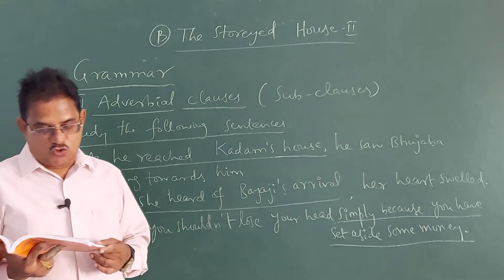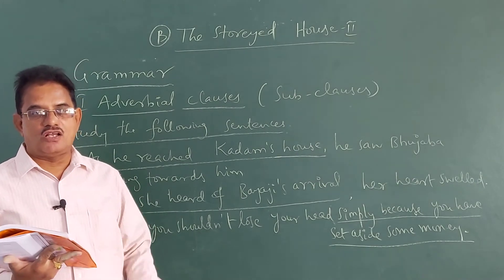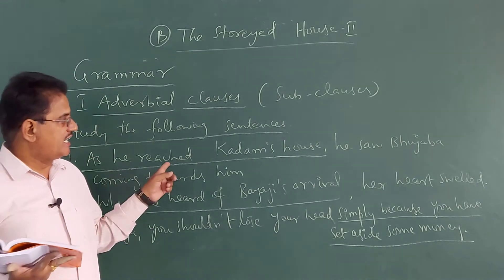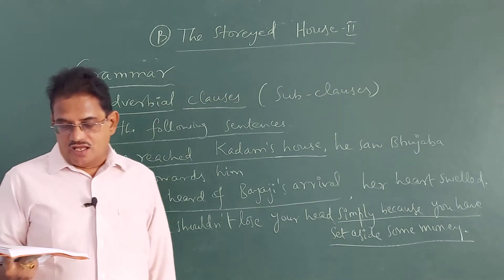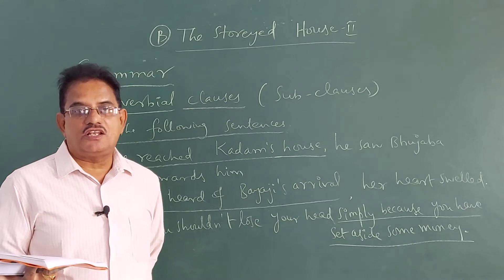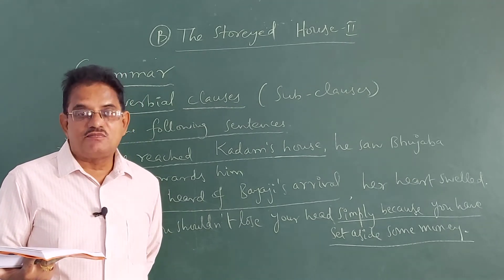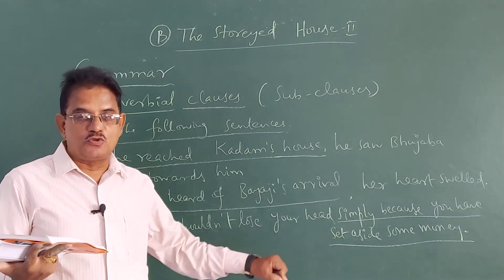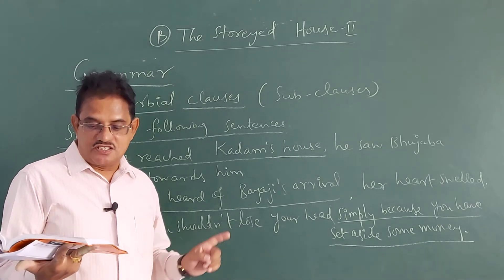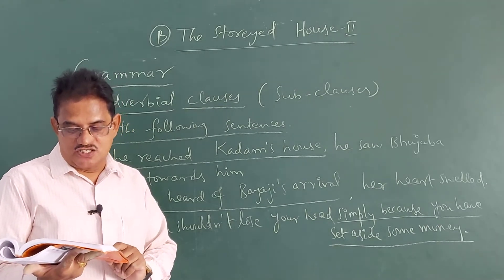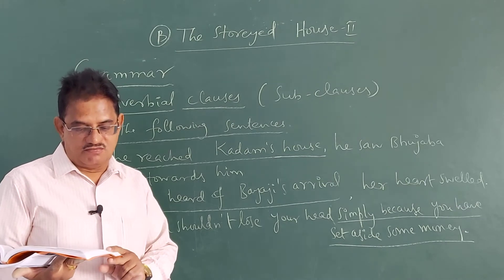Identify the adverbial clauses in the following sentences. You have to underline the adverbial clauses like in the examples given. For example: 'As Bayaji neared Budha Vihar, the children came running to him.' What should be underlined? 'As Bayaji neared Budha Vihar' — up to there you have to underline. That is the adverbial clause, because it depends on the remaining part of the sentence: 'the children came running to him,' which is the main clause.